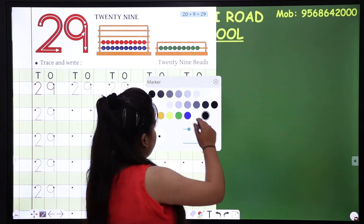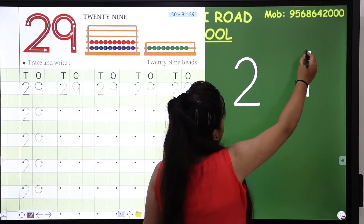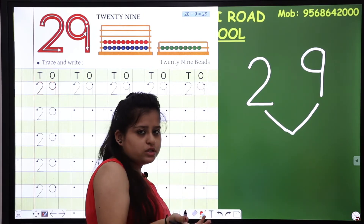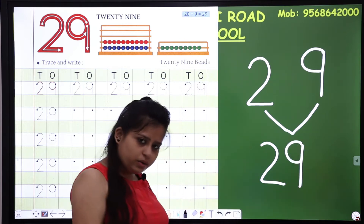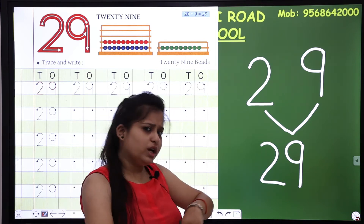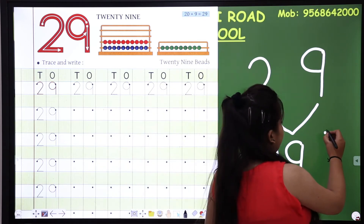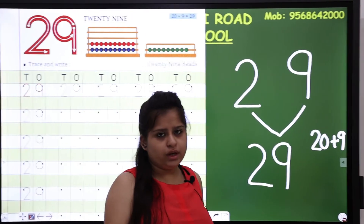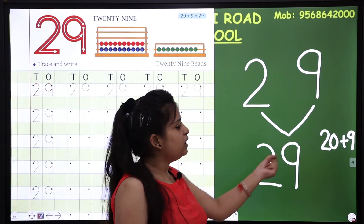See, number 29 forms where number 2 and number 9 meet. When you meet these numbers, which number will be formed? Number 29. When number 2 and number 9 come together, this is number 29. This is 2, this is 9. How does this form? There is 20, so 20 plus 9 is 29. But 29 is made up of 20 plus 9.